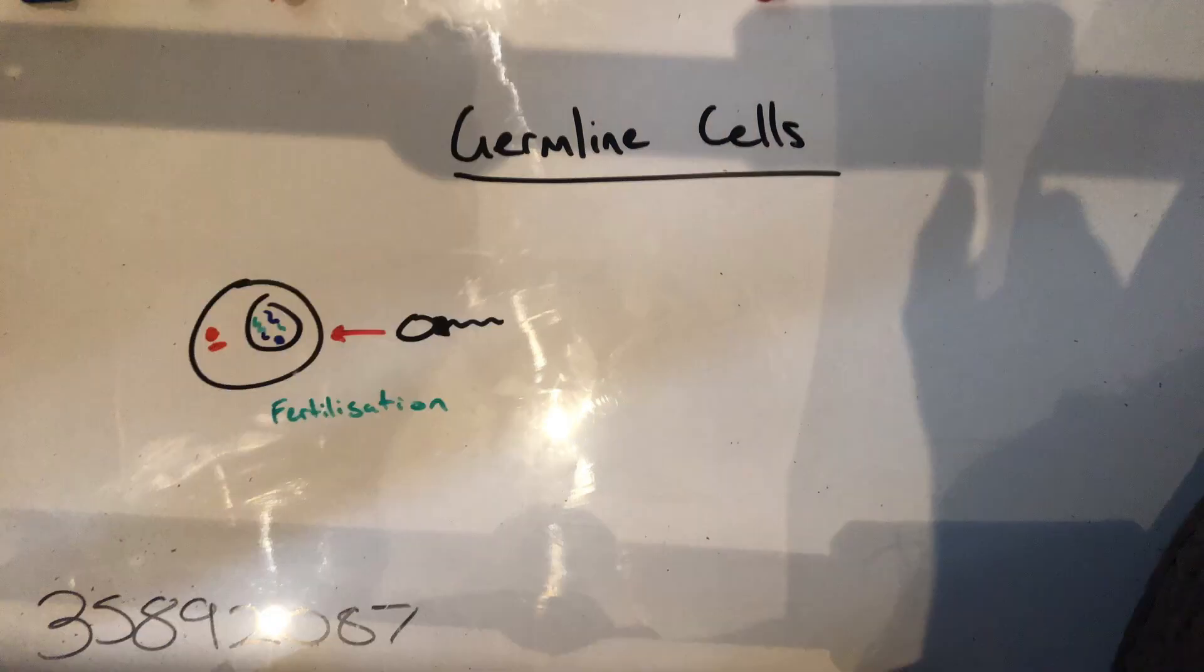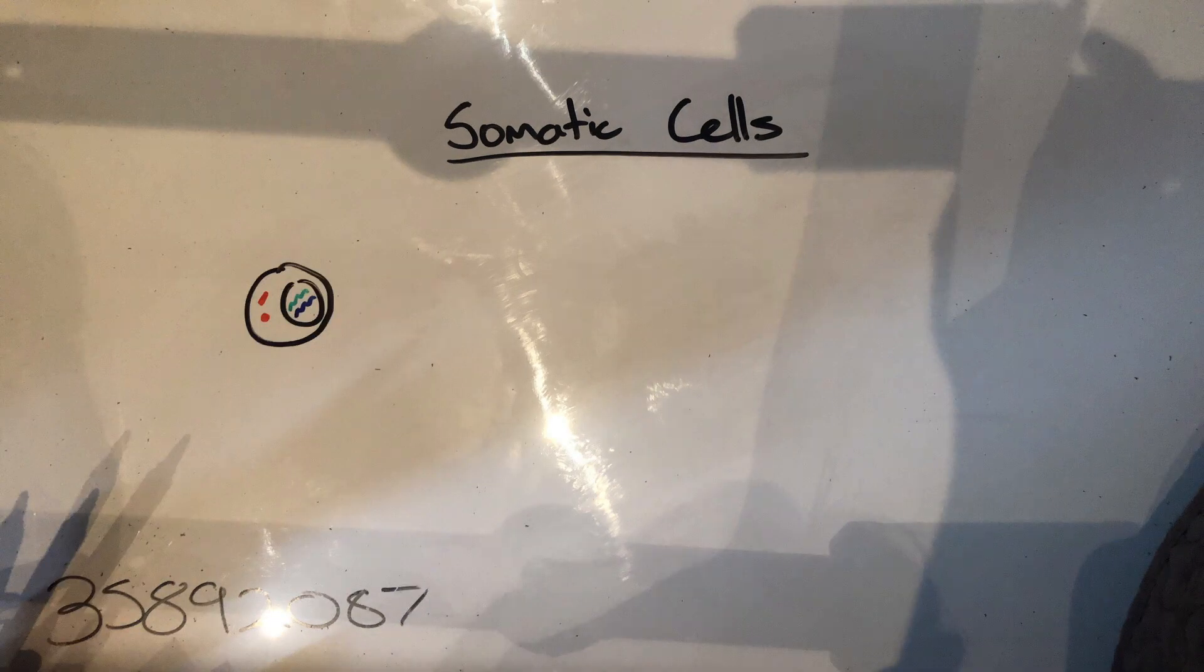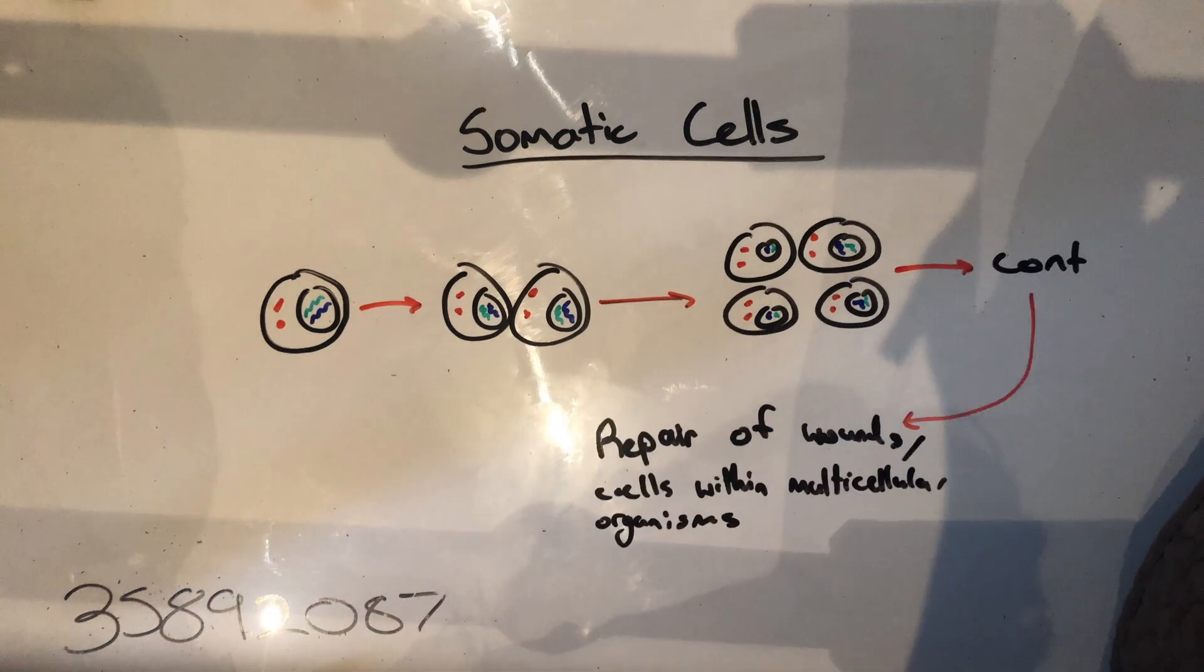Germline cells undergo meiosis to produce haploid gametes that fuse and form a diploid embryo that grows into an adult. Somatic cells complete mitosis to proliferate. These cells aid in the growth and repair of cells within multicellular organisms.